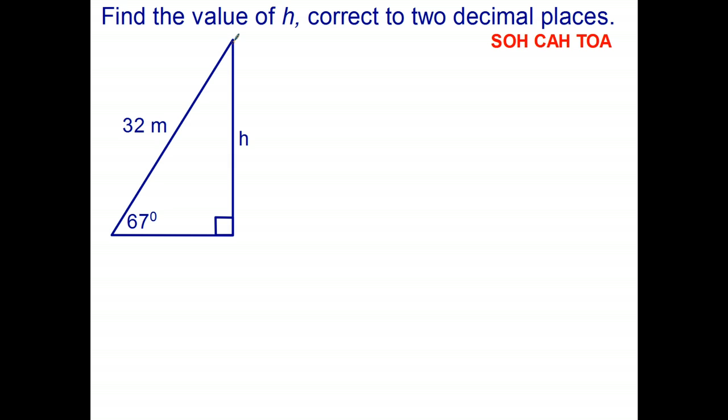Well we'll start as usual by identifying the three sides of the right angle triangle. So the side opposite the right angle is the hypotenuse. The side opposite the angle that we know is h so that's the opposite, and the side next to the right angle is the adjacent. Now which of the three trig ratios is going to be useful for this question? Well the one that we know is the hypotenuse is 32 meters. The side that I'm trying to find is h which is the opposite side.